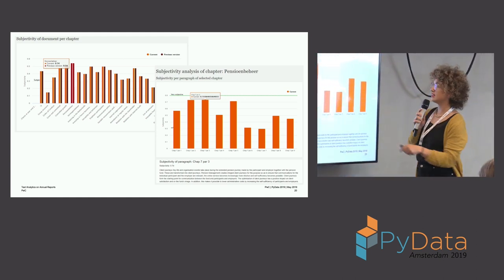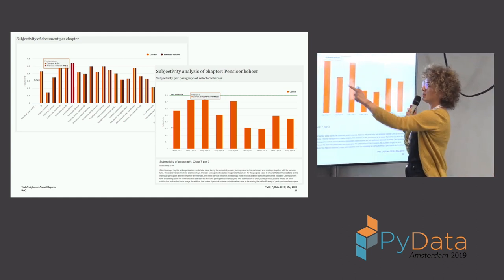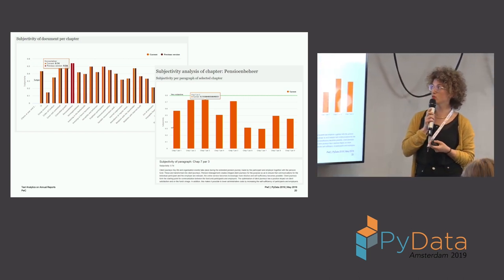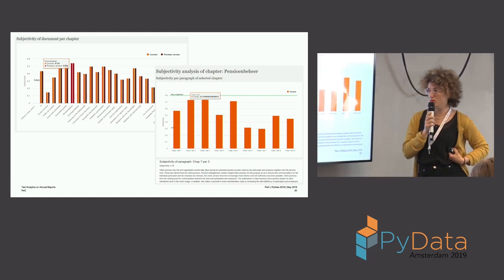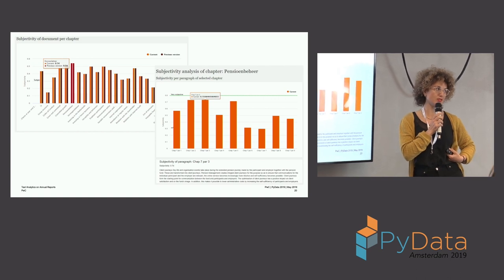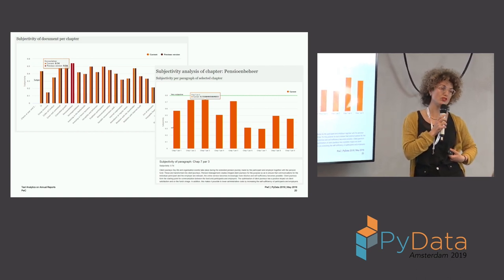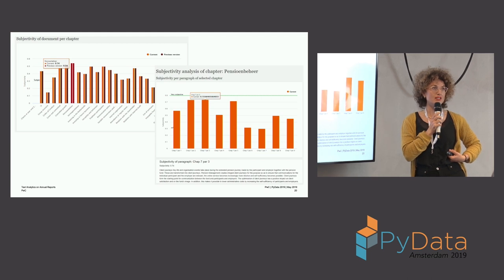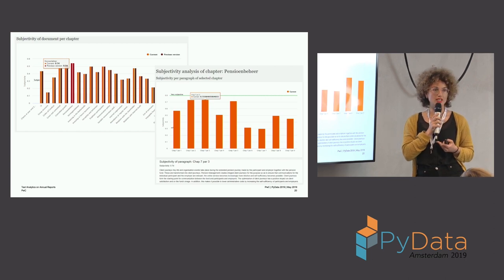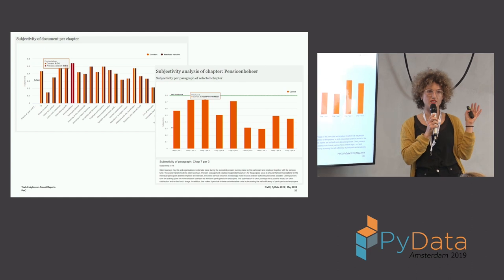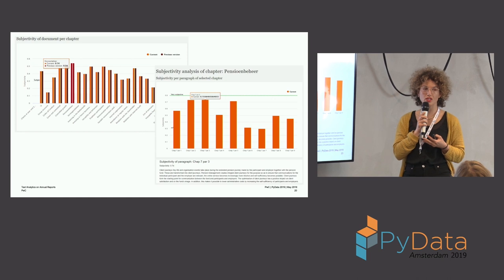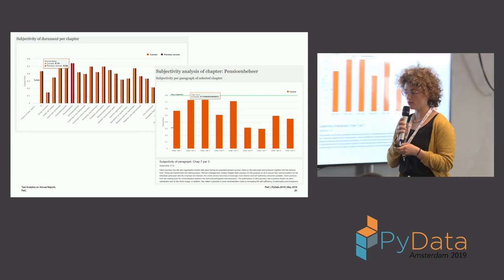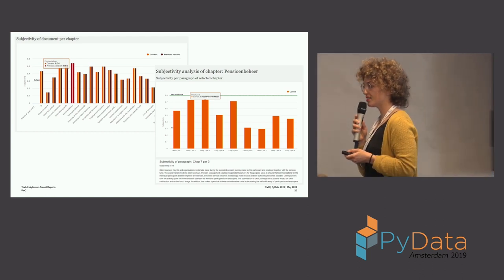Within a chapter you can see the different paragraphs, and the top three with the highest subjectivity scores allow you to zoom in and read what's there — then see if the subjectivity is correctly used. Sometimes you have fact-based text, but you could also have a very objective display of results where you do not want much subjectivity, because then the client could steer the minds of the readers of the annual report, and that's not according to standards.